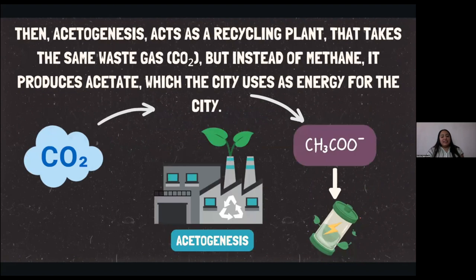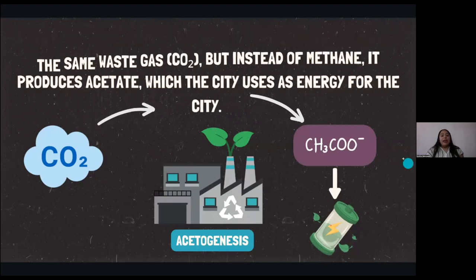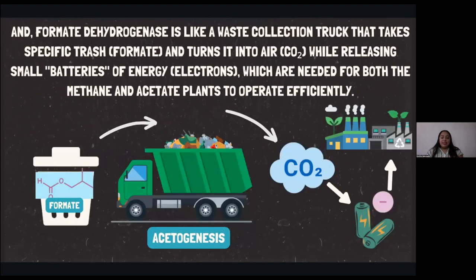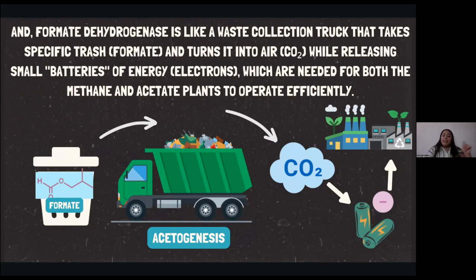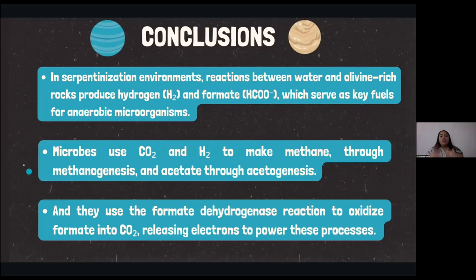Then we have acetogenesis, which acts as a recycling plant that takes the same waste gas — the CO2 — but instead of making methane, it produces acetate, which the city uses as energy for the buildings. And finally, we have formate dehydrogenase, which acts like a waste collection truck that takes the trash — the formate — and turns it into air (CO2), while releasing small batteries of energy (the electrons), which are needed for both the methane and acetate plants to operate efficiently. So, as you can see, all three processes are interconnected.